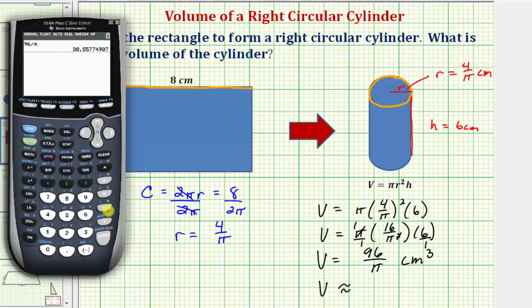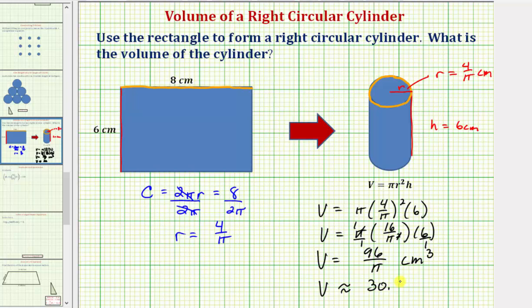Which to two decimal places would be approximately thirty point five six. So the volume is approximately thirty point five six cubic centimeters.